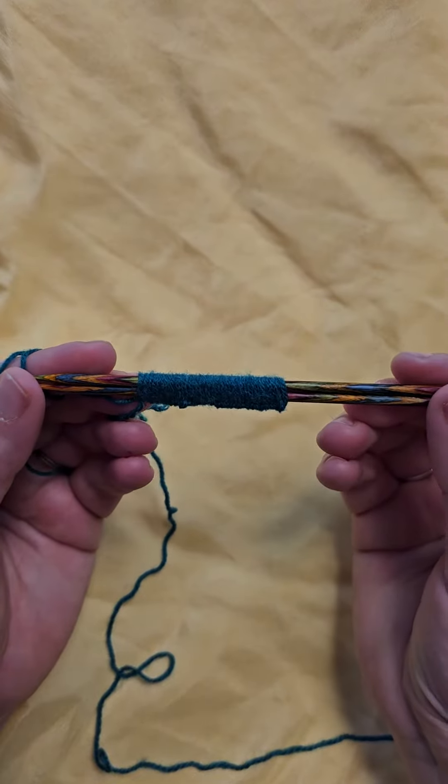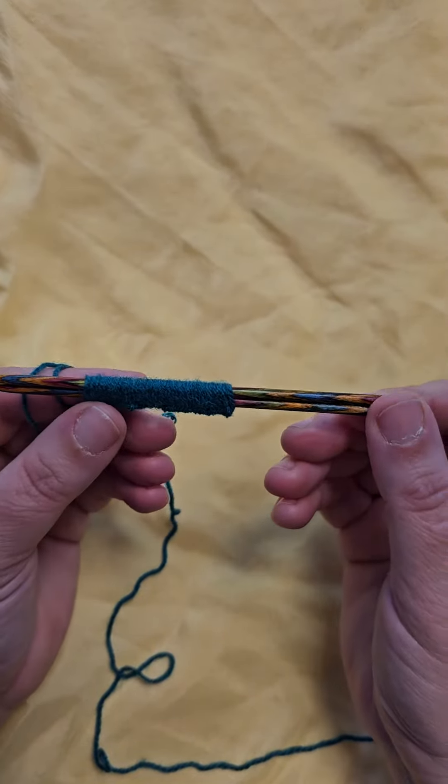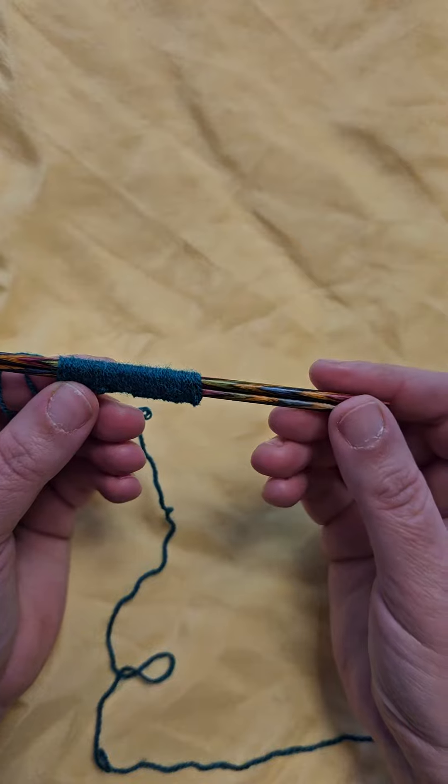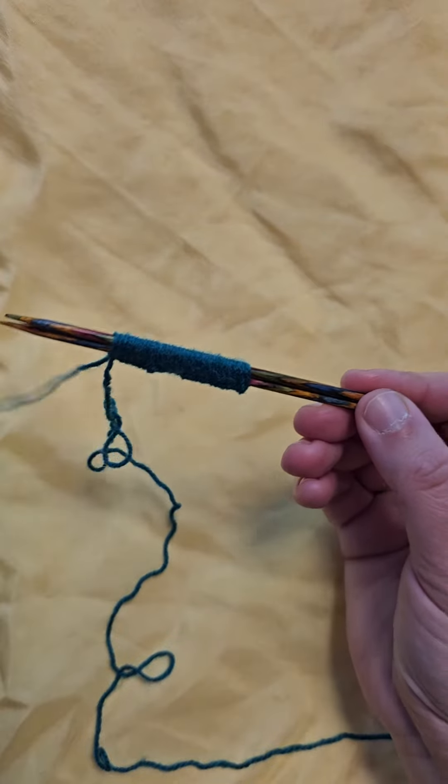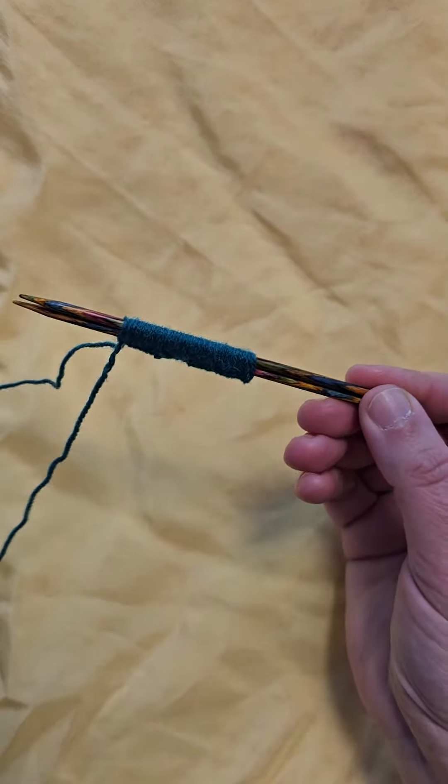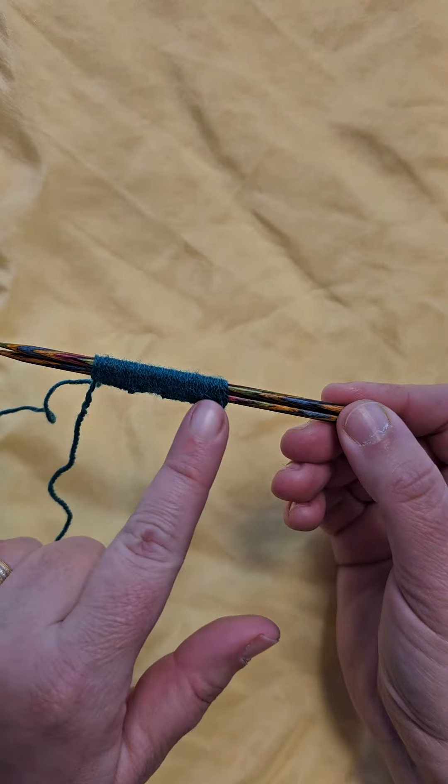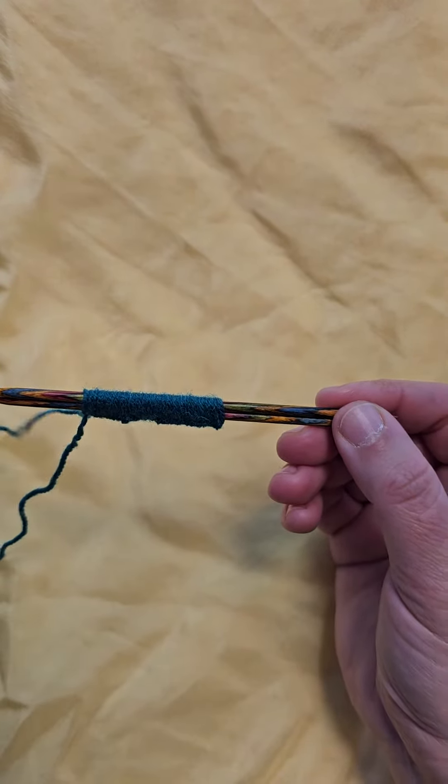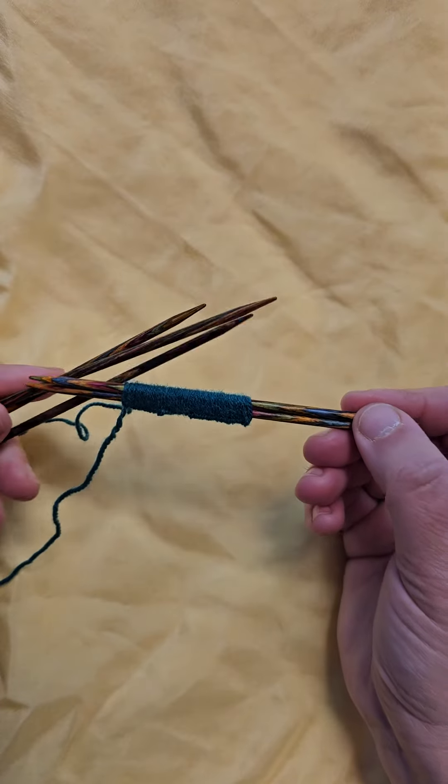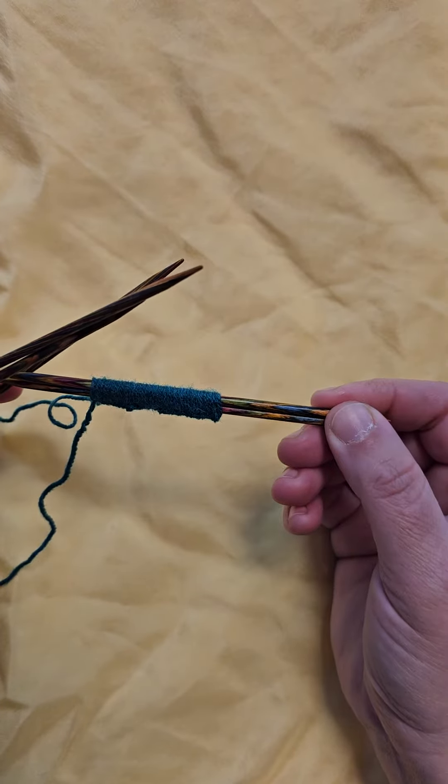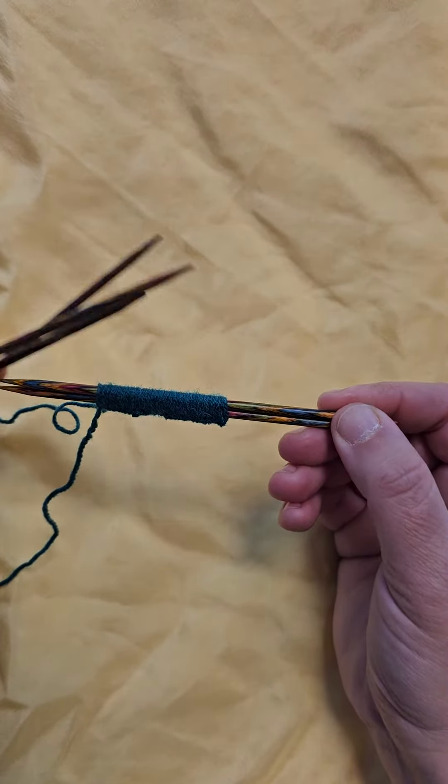You finished casting on the stitches needed for your first sock knitting project, but what do you do now? Now you need to take your stitches into the working mode with five needles. Here's how to begin.